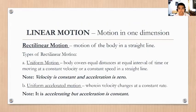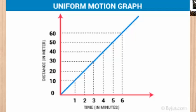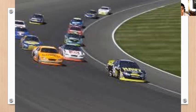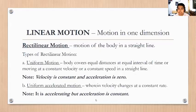Linear motion, or motion in one dimension, is called rectilinear motion — the motion of a body in a straight line. Types of rectilinear motion: Uniform motion is when a body covers equal distances at equal intervals of time, moving at a constant velocity or constant speed in a straight line. Note: velocity is constant and acceleration is zero. Uniformly accelerated motion is when velocity changes at a constant rate — the object is accelerating but the acceleration is constant.